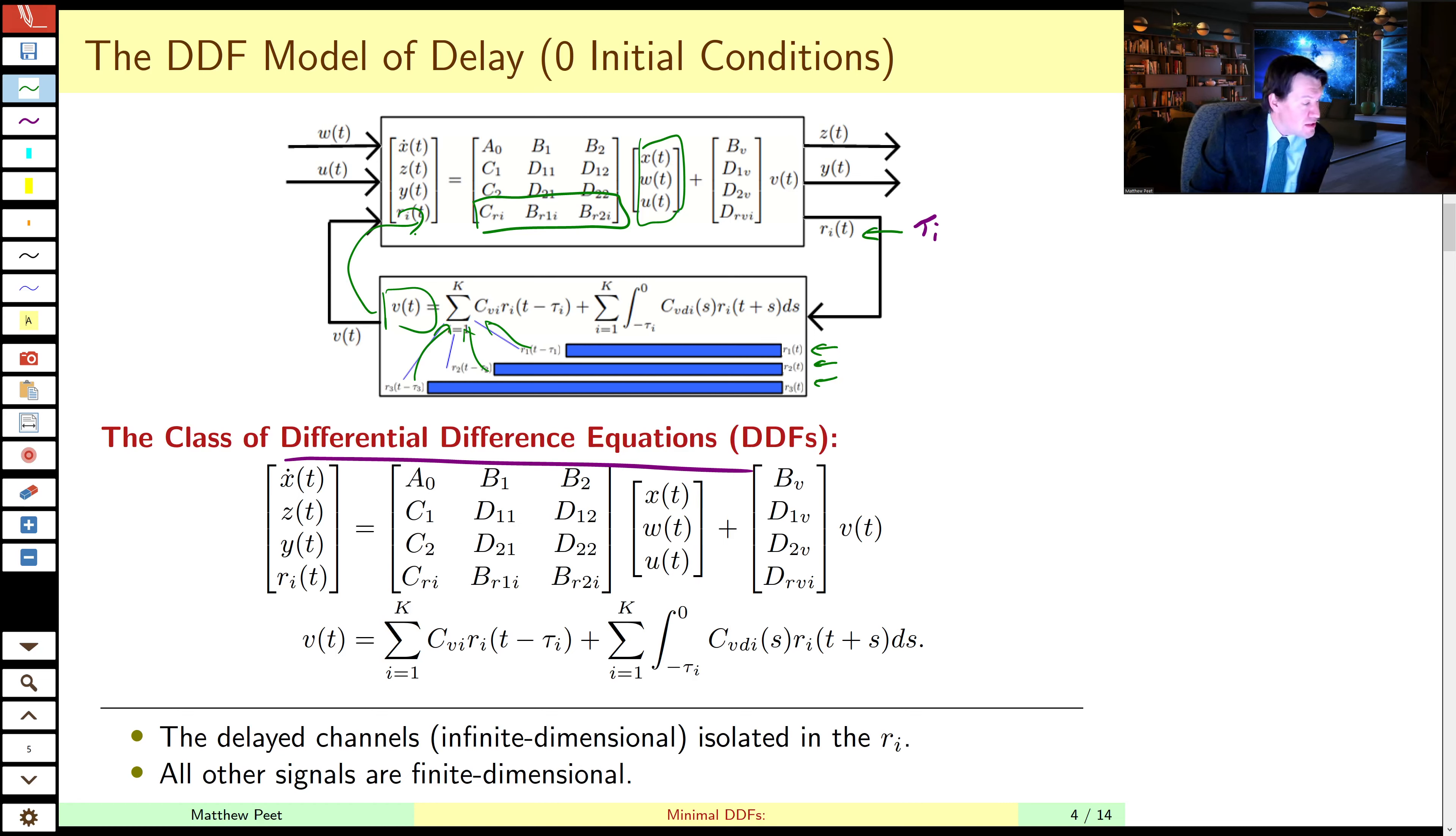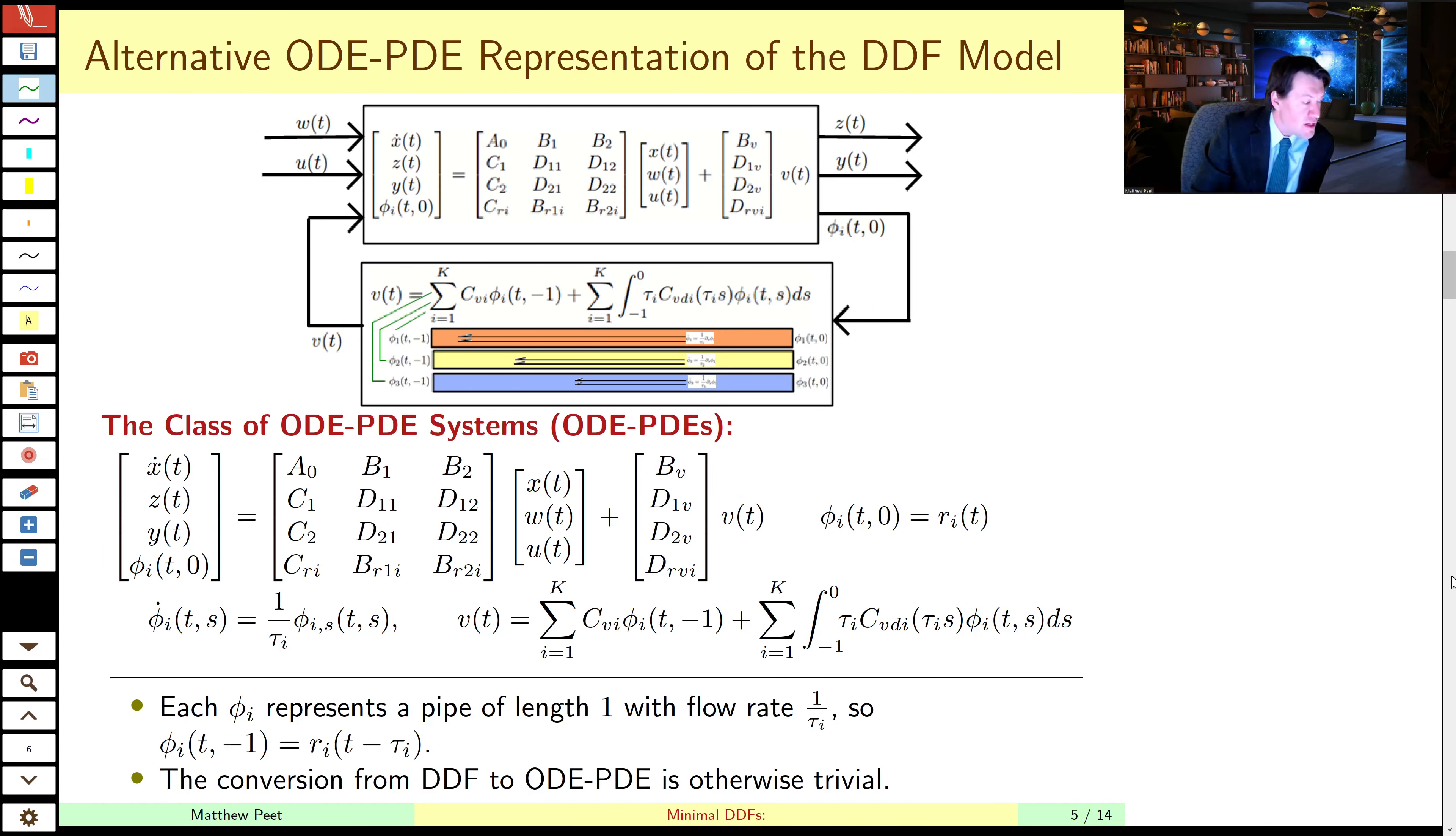So this parameterization allows us to efficiently account for the structure of the problem. Furthermore, this DDF model is easy to represent in some of the more computationally oriented representations. And in particular, we focus on the ODE-PD representation. It's easy to convert a DDF to an ODE-PD representation. The only difference is we take those vectors ri, we make them the boundary conditions on a transport equation, where we accelerate the flow through the transport equation, depending on the delay. So small delays move quickly, large delays move slowly, and the spatial domain of the PDE is normalized to be 0, negative 1.